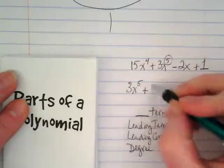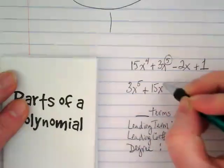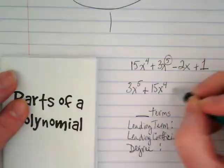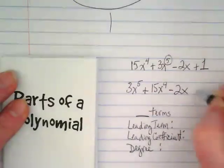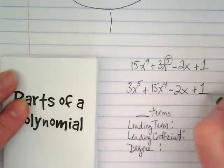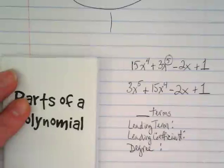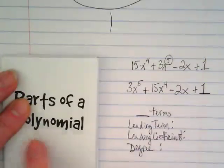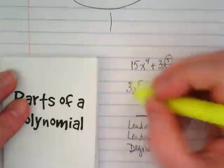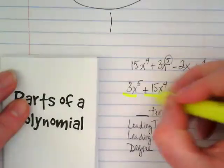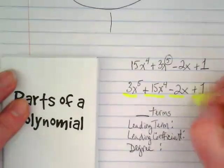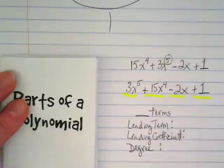So what's going to come next? 15x to the 4th minus 2x plus 1. Now that it's in the right order, we can do all the things that we said we were going to do here. We said we were going to underline the terms. And remember, the sign that's in front of it goes with the term.